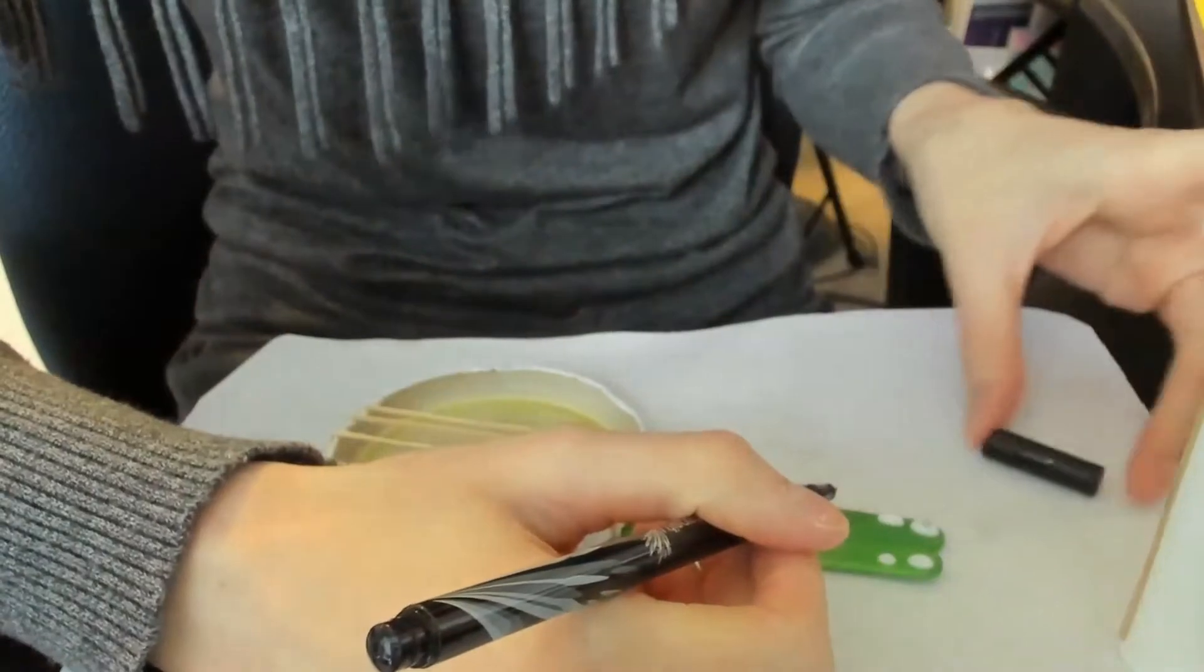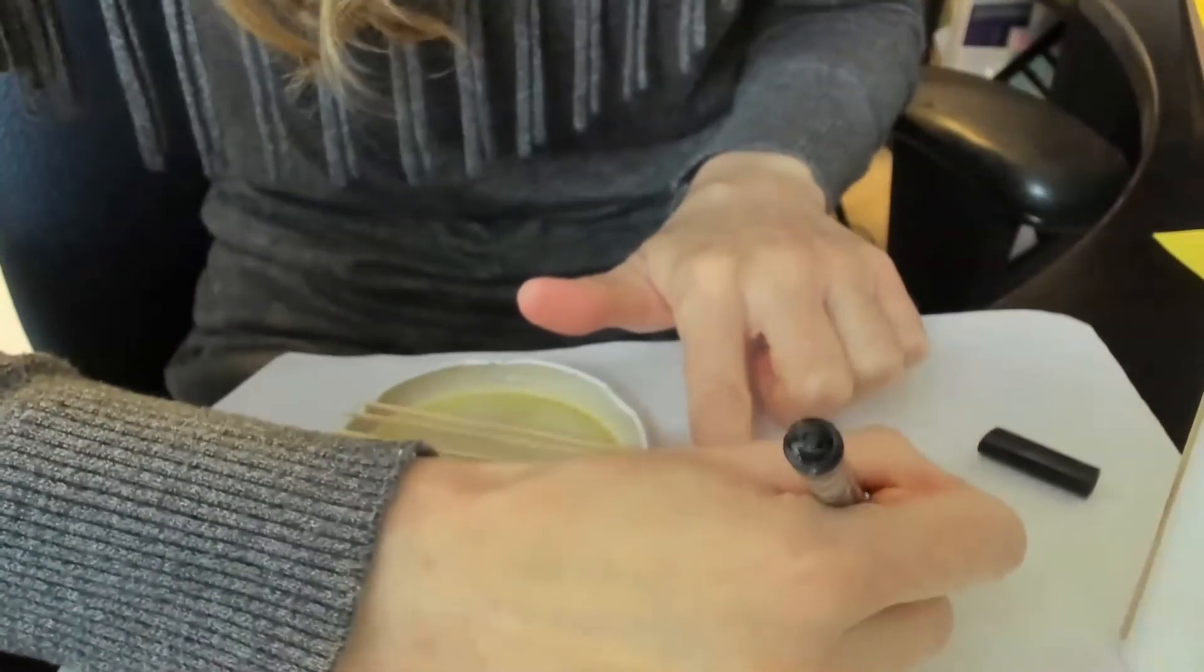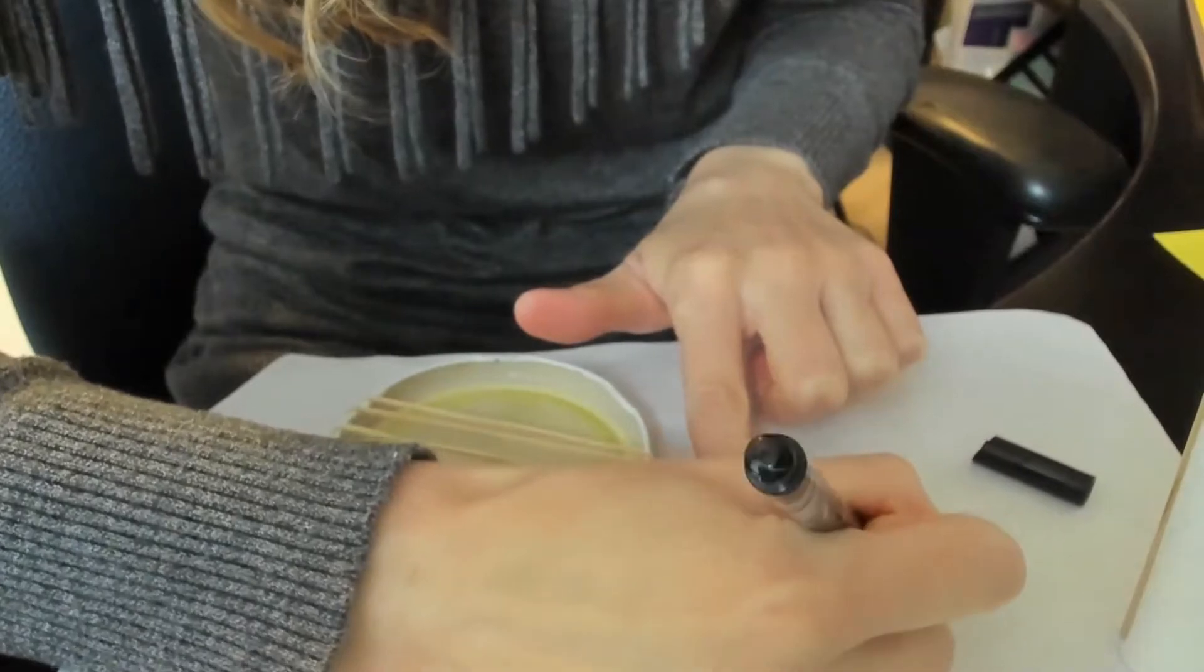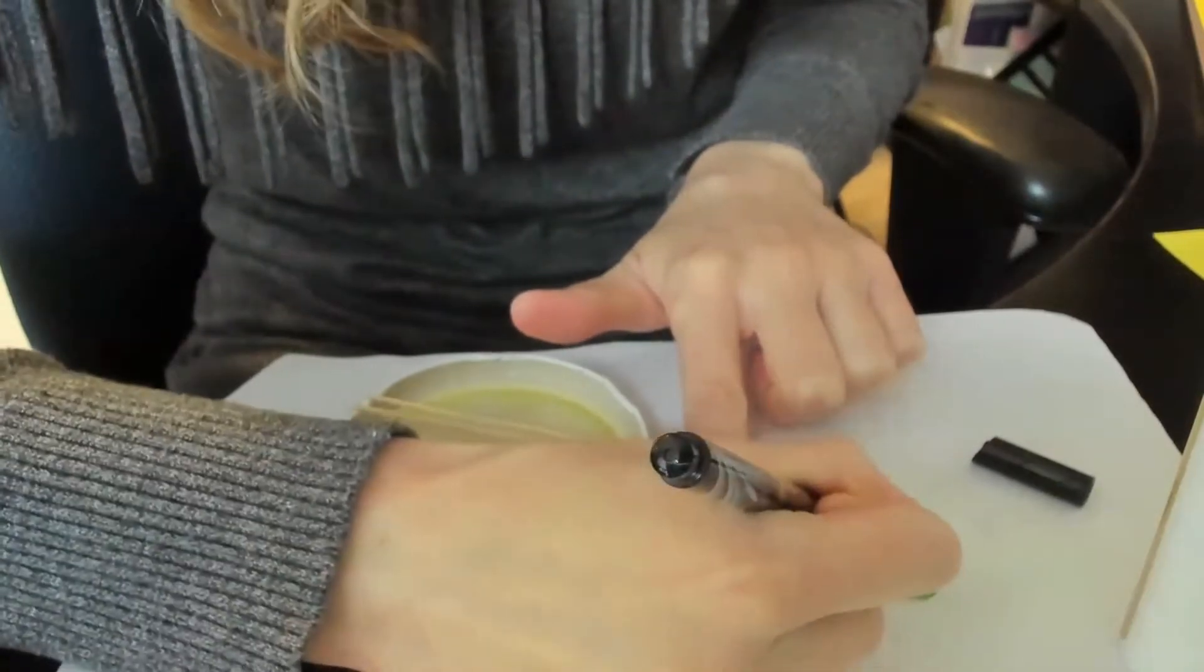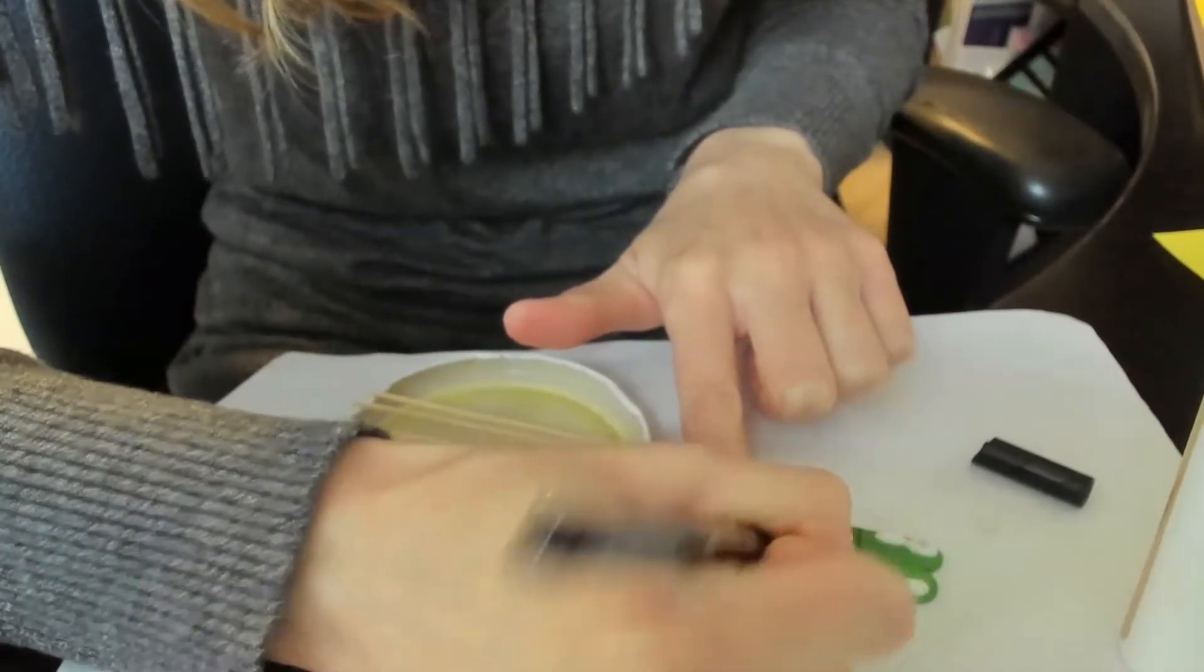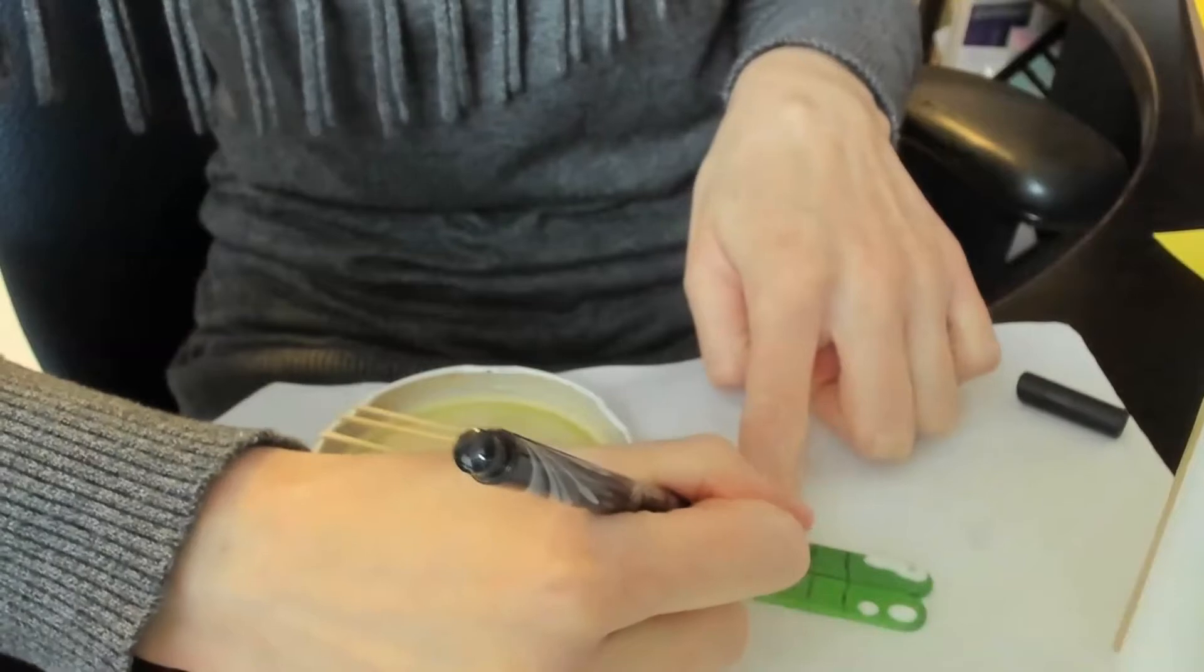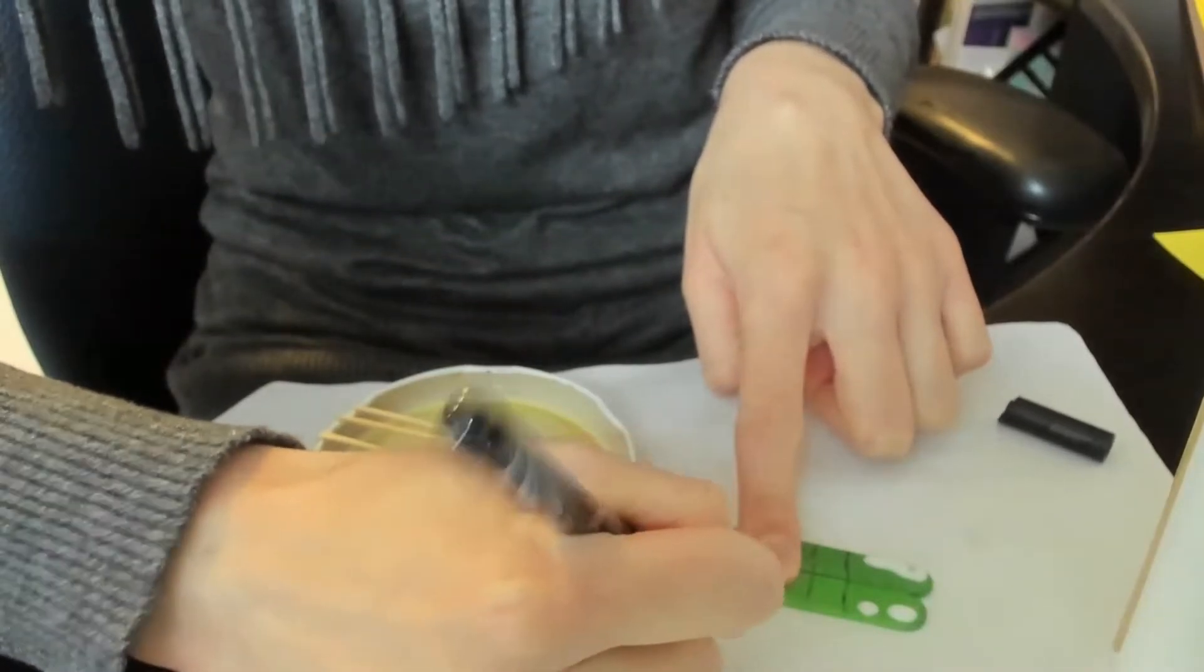The tuning pegs usually attach to the strings on a guitar or banjo and allow you to tune them by tightening or loosening them. I'm going to draw some lines going the opposite direction of my strings to make it look like frets. But you don't have to do this. You can decorate yours however you like.